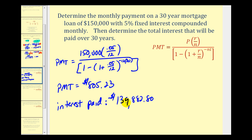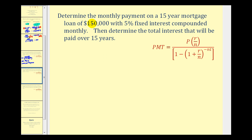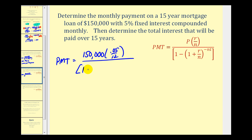Notice we're paying almost as much interest as the total loan amount. For our second example, we'll compare the same loan but now with a 15-year mortgage instead of 30 years. Everything is the same except T, the number of years, will be 15 instead of 30. So our exponent will be negative 12 times 15, rather than 30. Let's see how this affects our monthly payment as well as the total interest paid over 15 years.